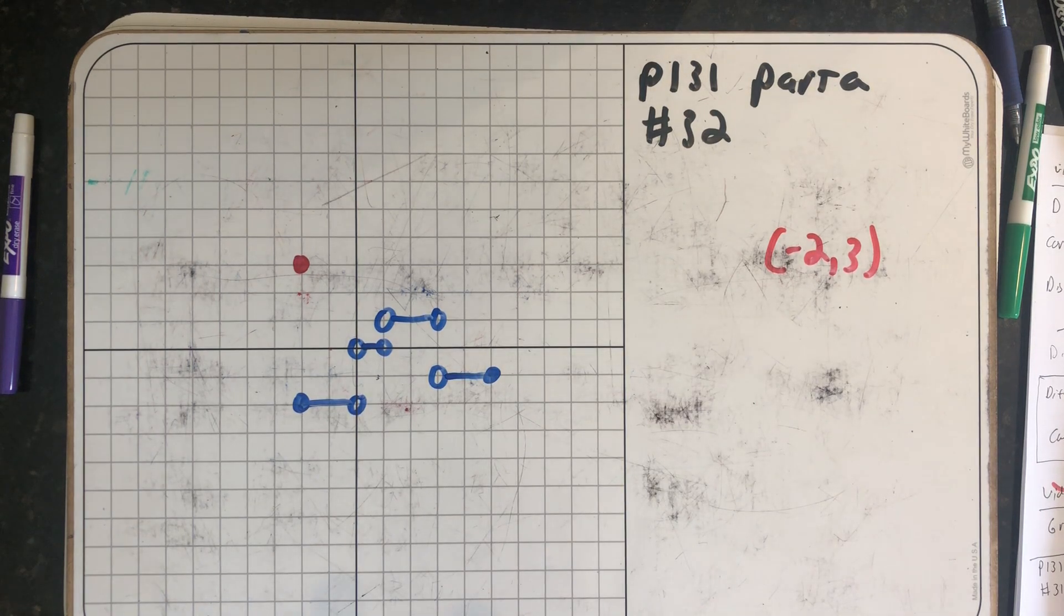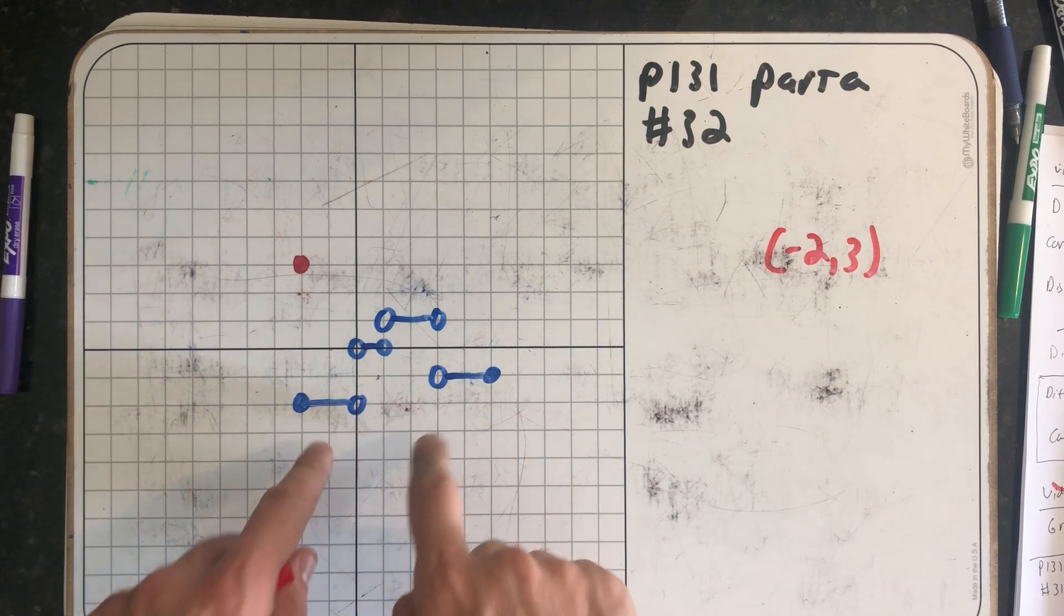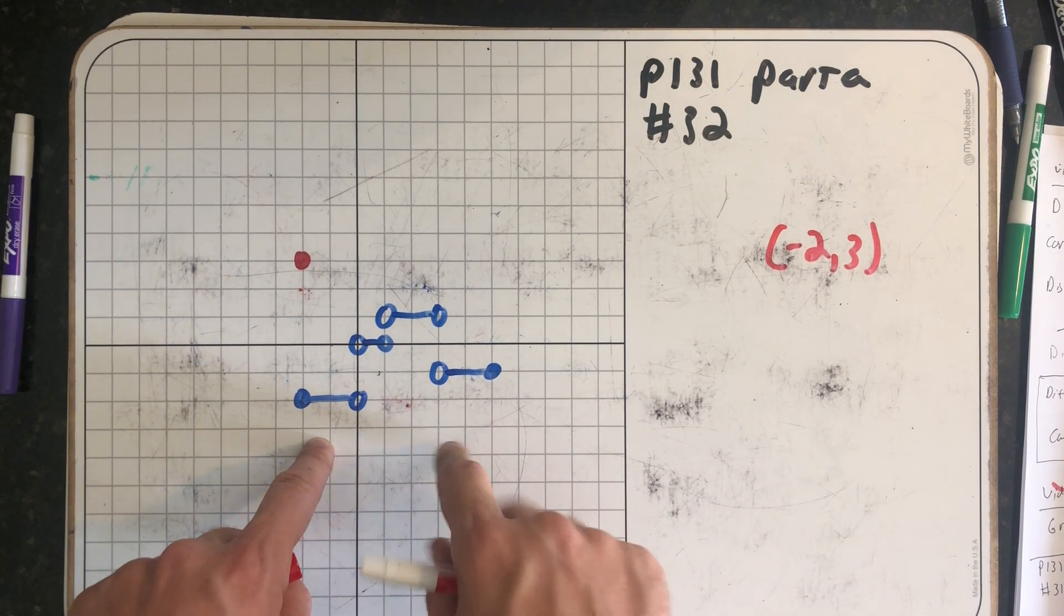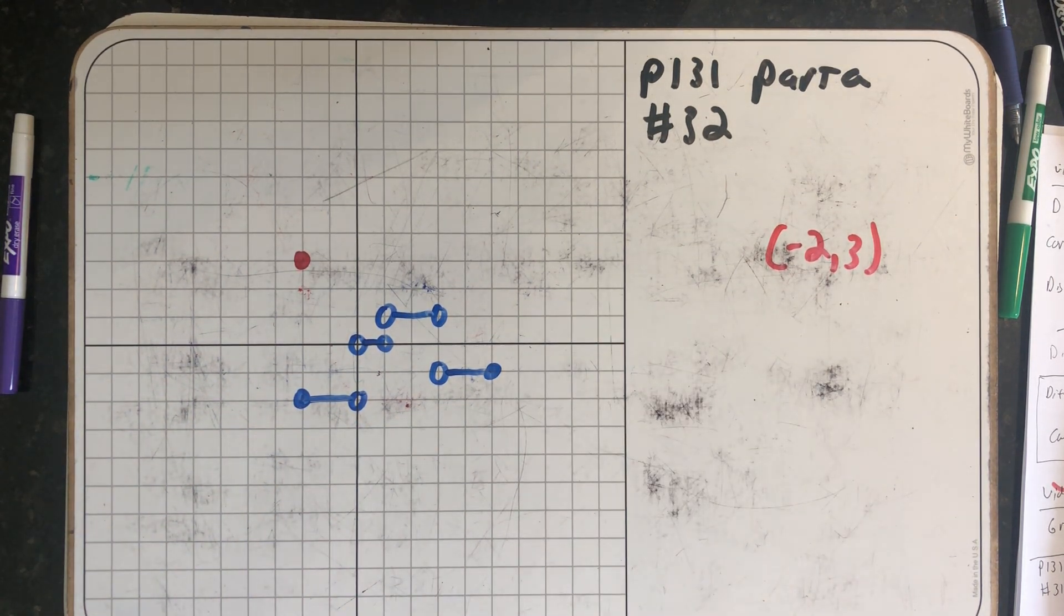All right, so now I'm supposed to graph the rest of the function. It's all line segments, and this is supposed to be the graph of the derivative. And that's where I understand what's going on.